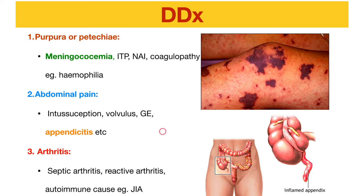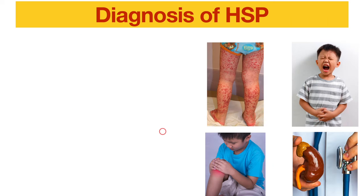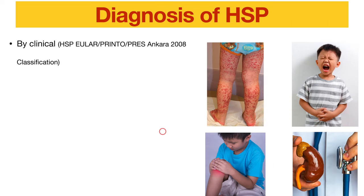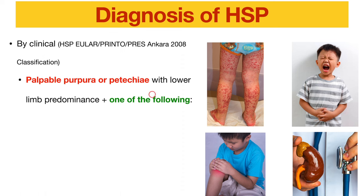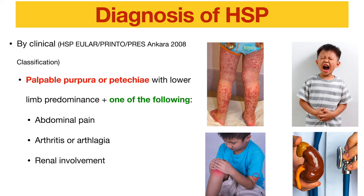How do we diagnose HSP? It is a clinical diagnosis. By the HSP EULAR guideline of 2008, the classification states that we must have palpable purpura or petechiae over the lower limbs — this is the most important sign — plus one of the following: abdominal pain, joint pain, or renal involvement.